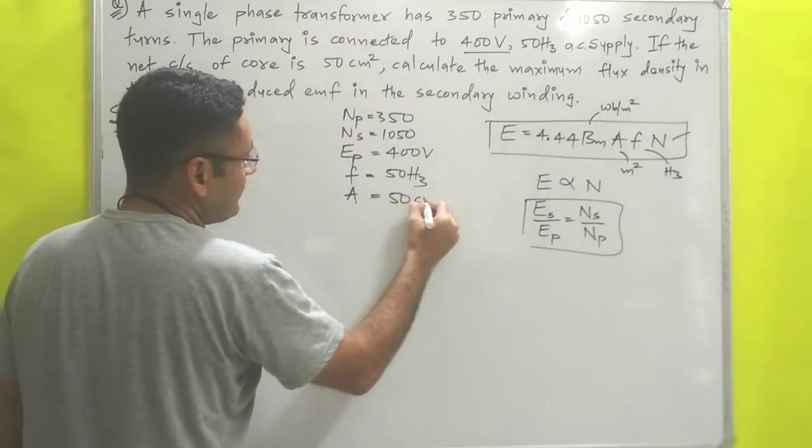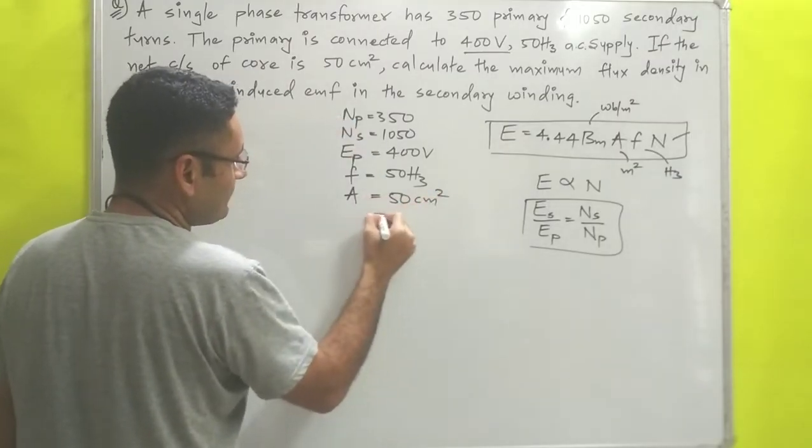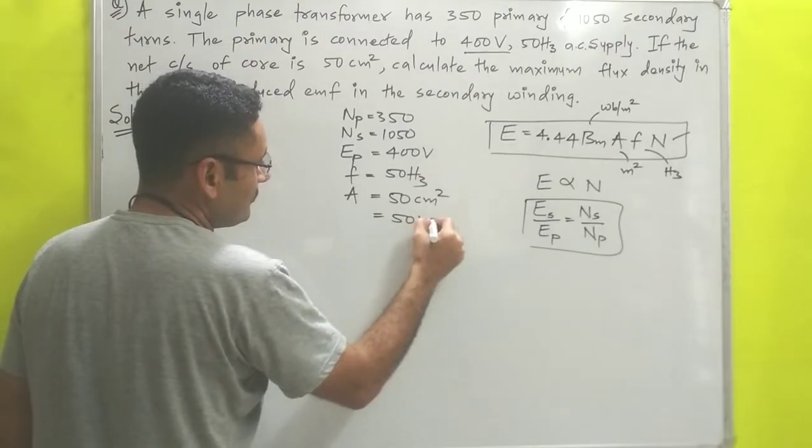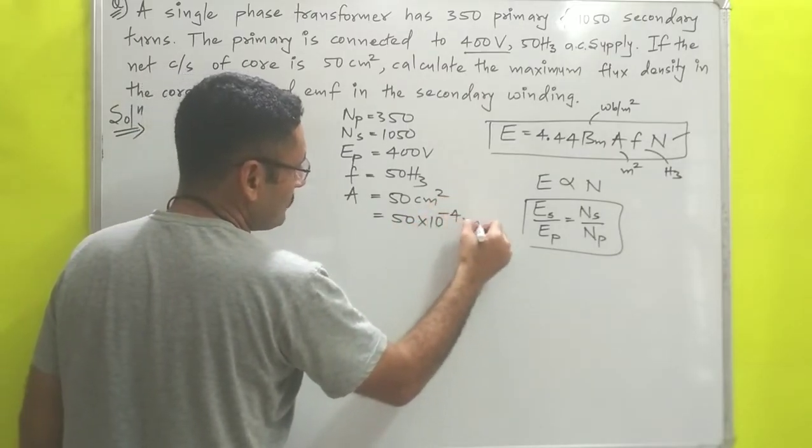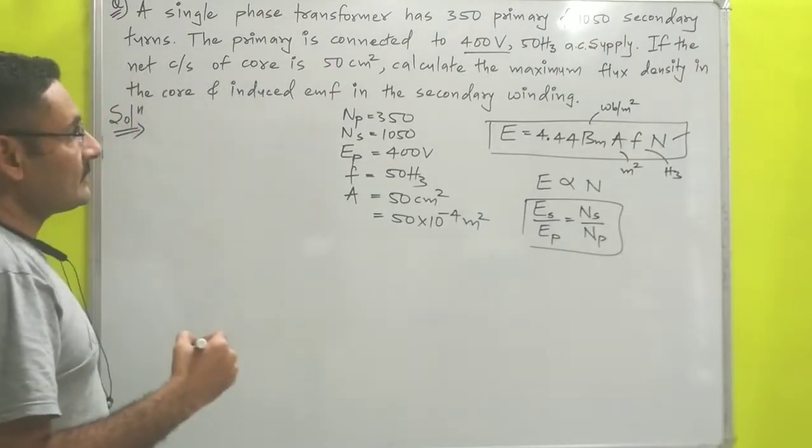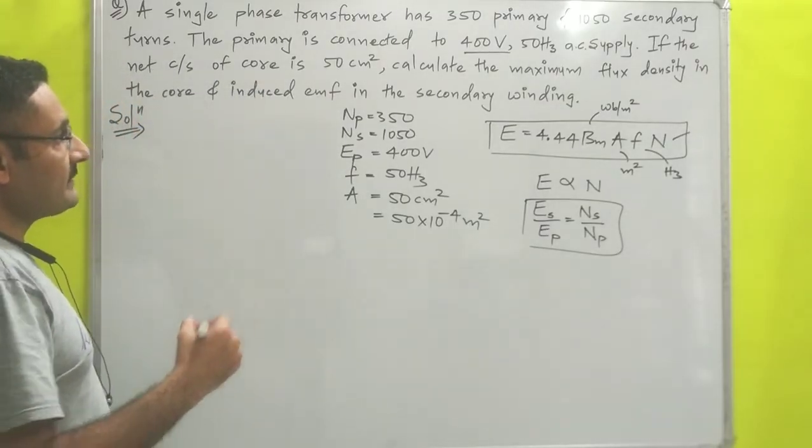If the net cross section area of the core is 50 centimeter square, we have to convert to meter square, so 50 × 10^-2 square equals 10^-4 meter square.